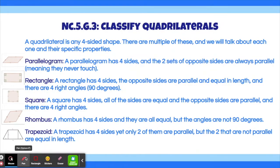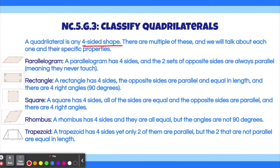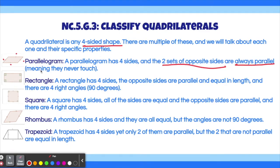Here is a little bit about some quadrilaterals and their specific properties. A quadrilateral is any four-sided shape — if it has four sides, it's a quadrilateral, no matter what. The first type is a parallelogram. It has four sides, and the two sets of opposite sides are always parallel, meaning they never touch. This side and this side are opposite and parallel, and the same thing with the other pair of opposite sides.